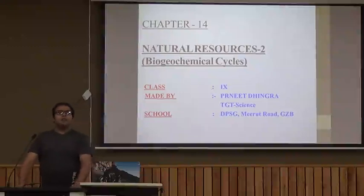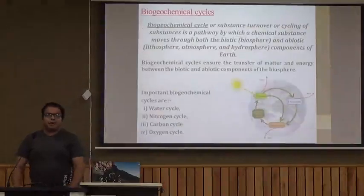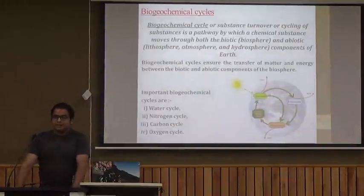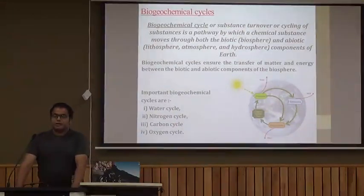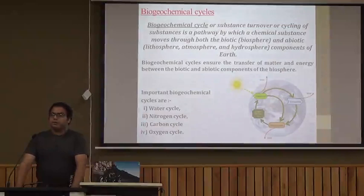Hello students, welcome again to the next part of our chapter on natural sources. In this part we study biogeochemical cycles. These are the substance turnover or cycling of substances in a pathway by which a chemical substance moves through both biotic and abiotic components of Earth. These cycles ensure that matter is transferred and also energy between the biotic and abiotic components of our nature.